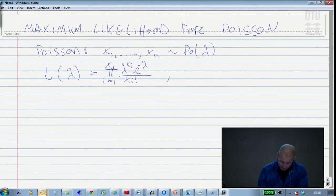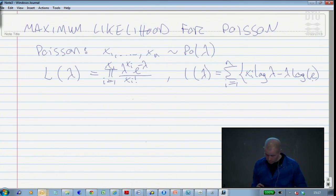If we take the log likelihood function of this one, it becomes really nice and ready for an optimization. It's the sum from i equals 1 to n of xi log lambda minus lambda log e, which is 1, minus log of xi factorial.